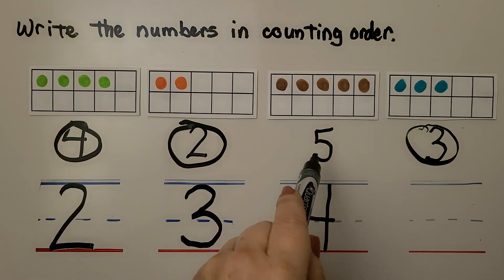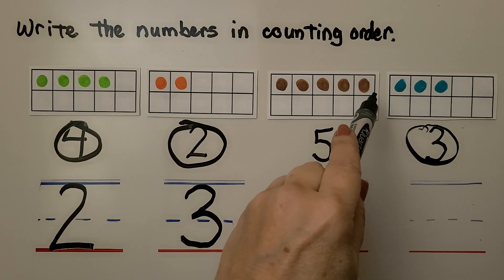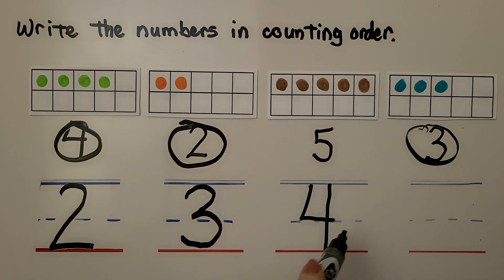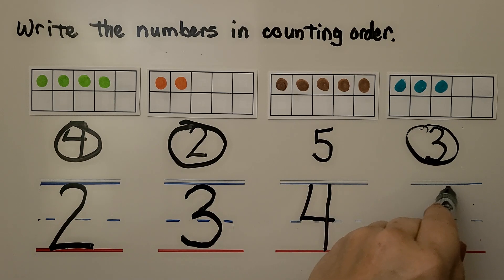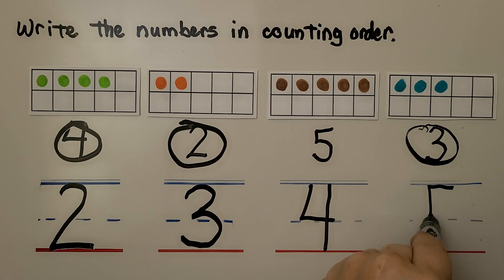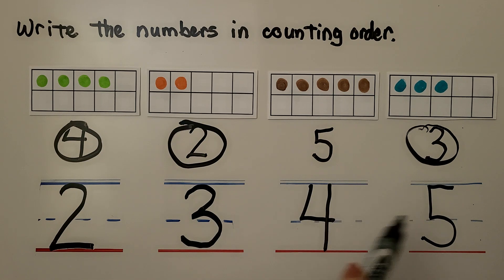We did the 4, so that means the next one is 5 because it's 1 more than 4 and it's the only one left that needs to be written. We have 2, 3, 4, 5 — now the numbers are in counting order.